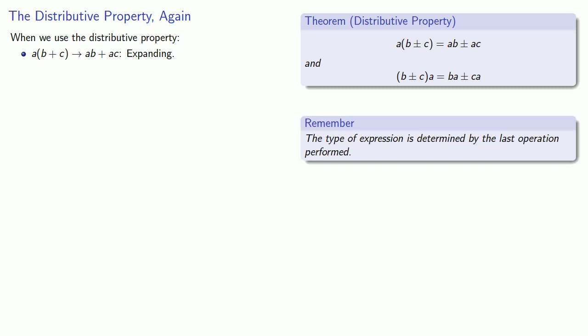It's useful to keep in mind that the type of expression is determined by the last operation performed. When we go this way, we're going from a product into a sum. So the thing to remember is that when you're expanding, what you should end up with is a sum.